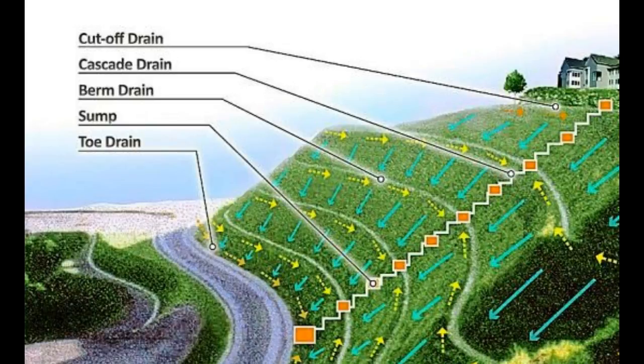Cascade drains are built along the cut slope with a stepped arrangement. Their basic objective is the reduction and/or elimination of energy generated by flowing water.